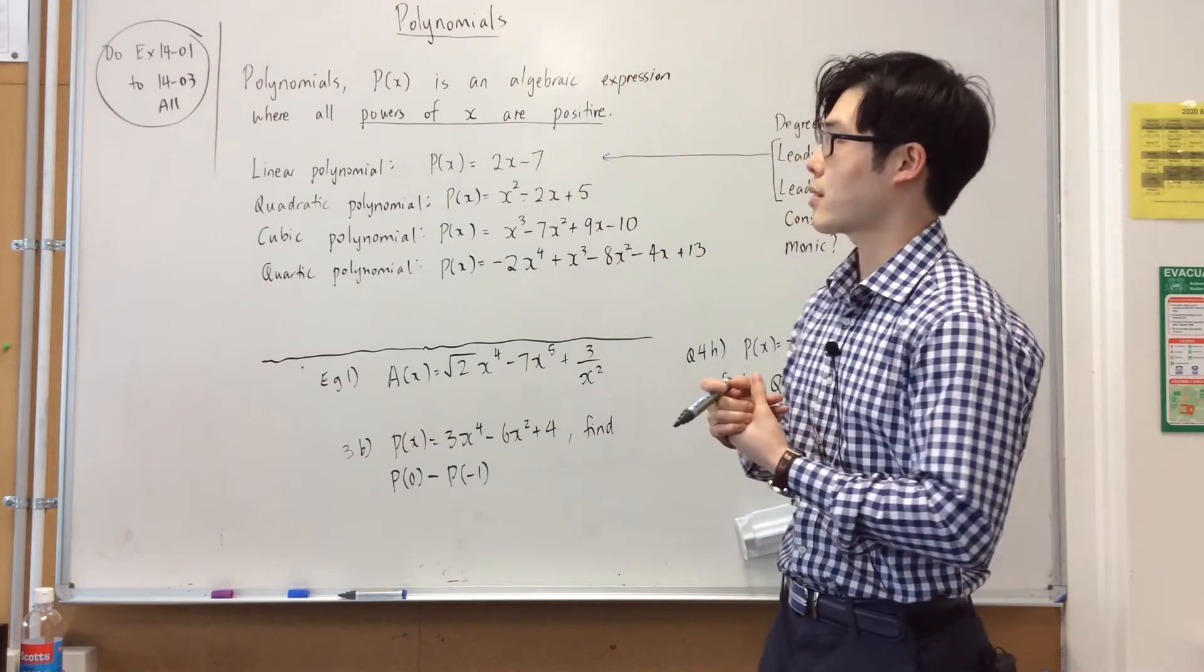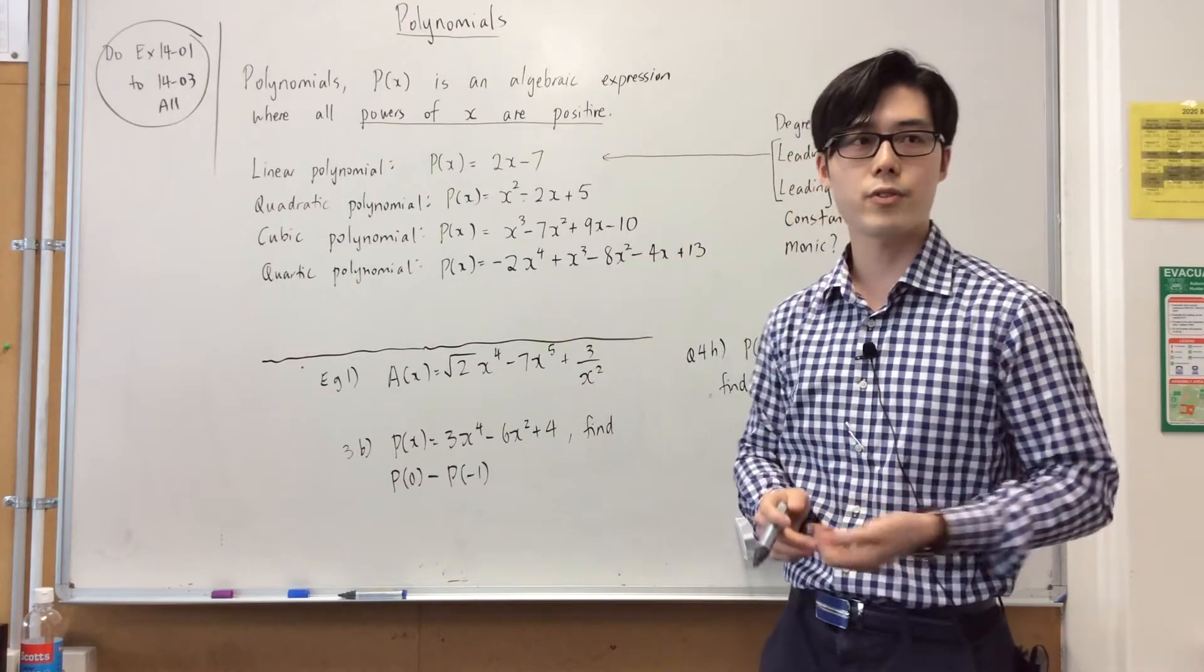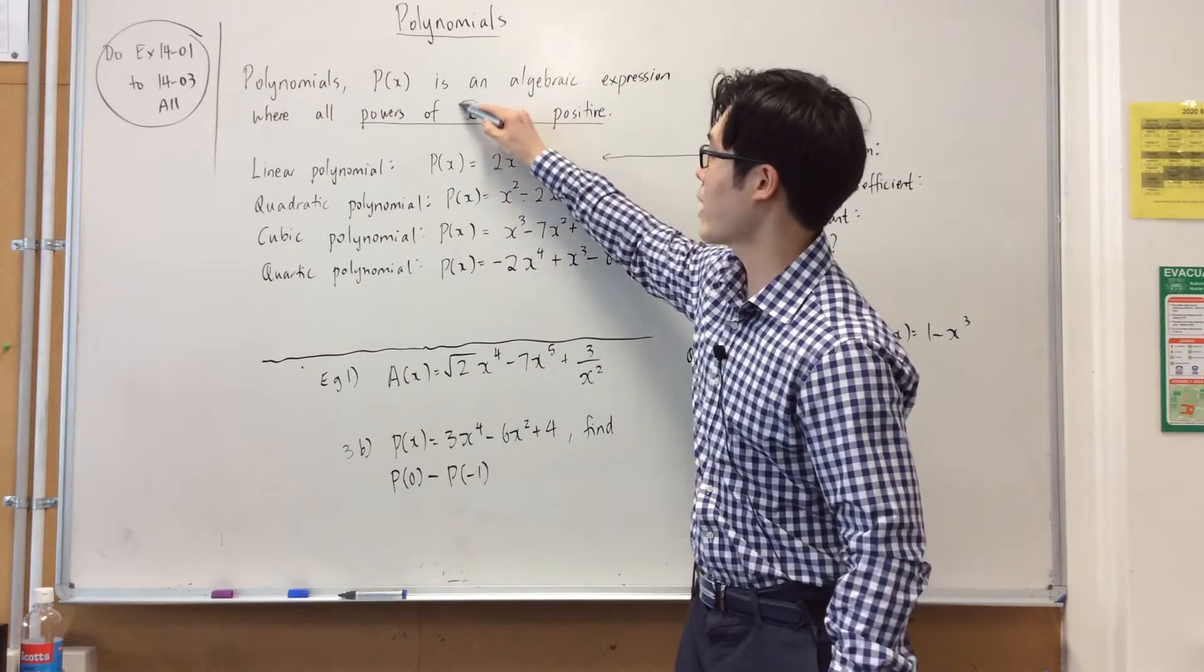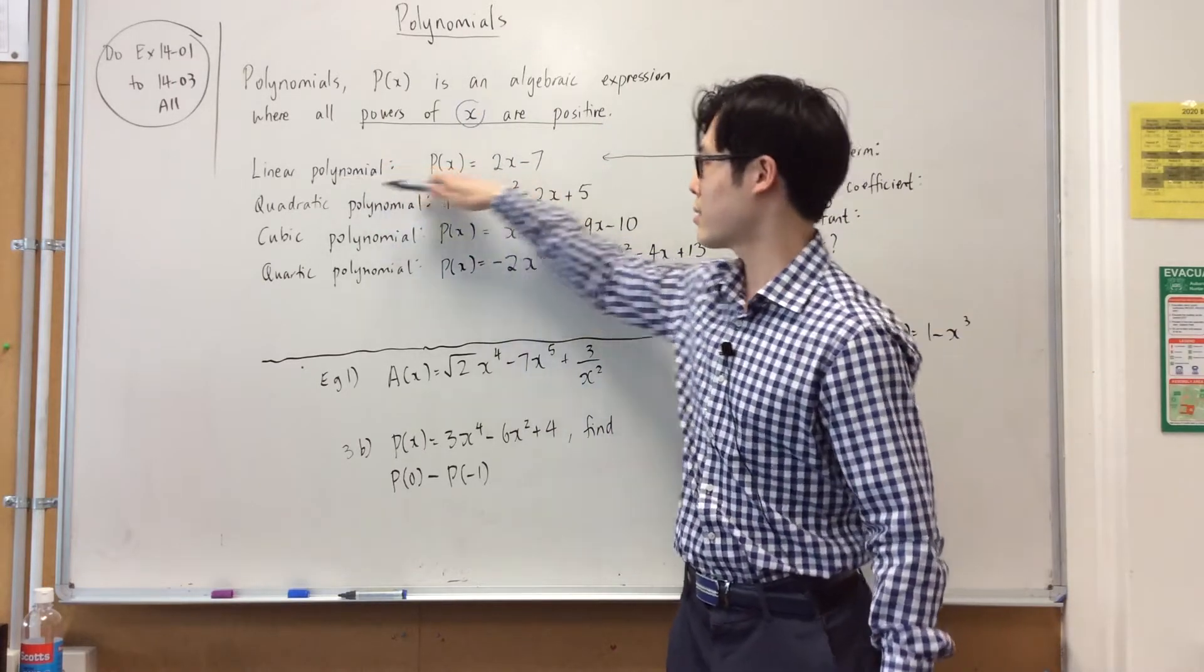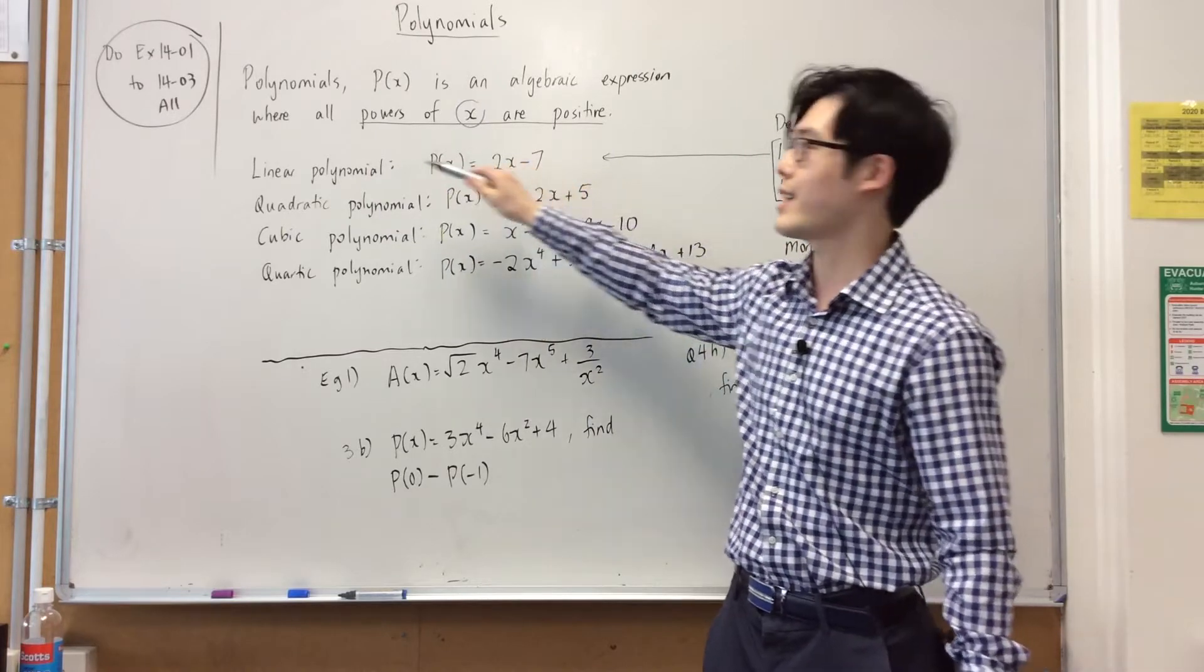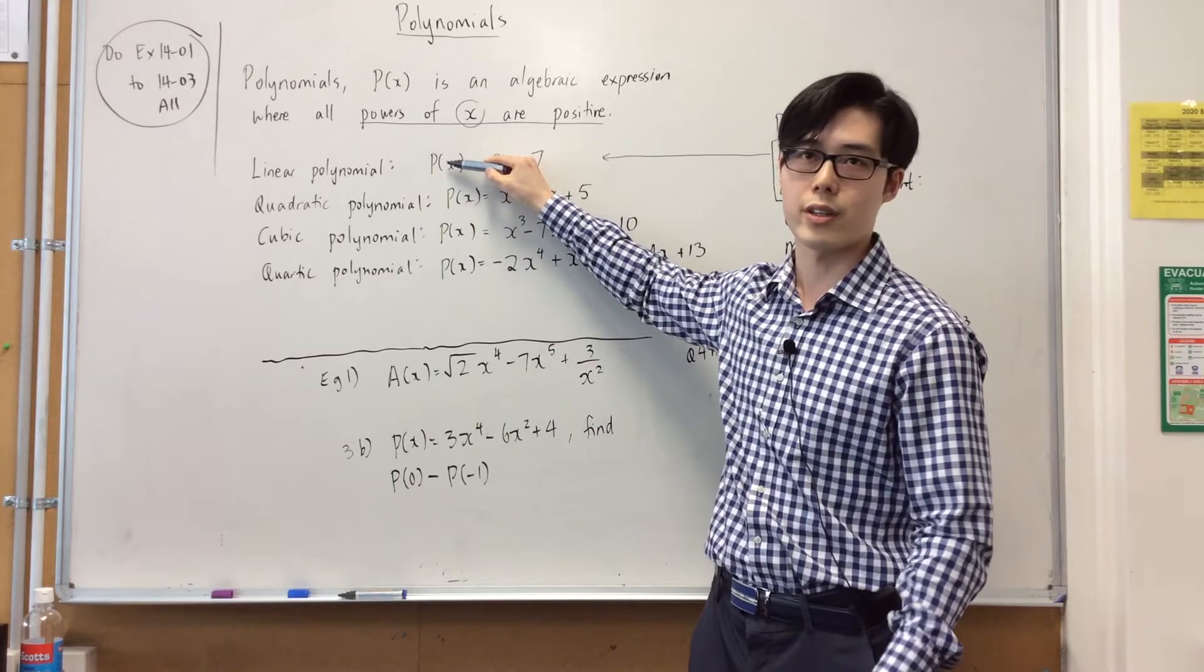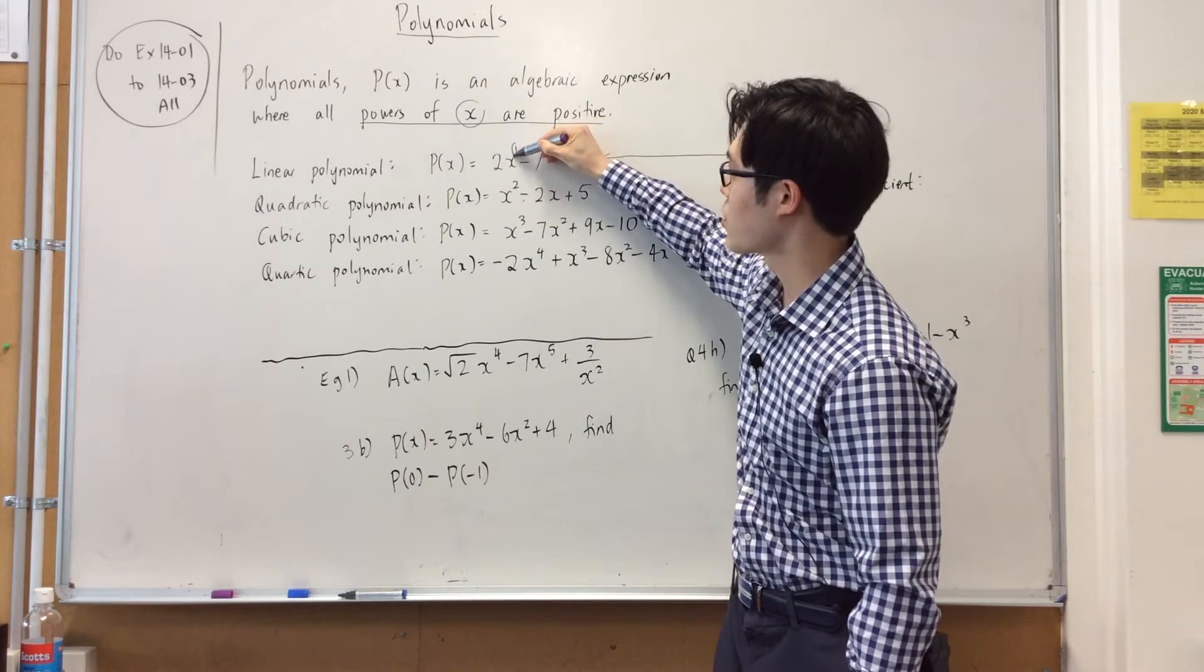So girls, basic definition, polynomials is basically an algebraic expression. The only difference between polynomials and any other algebraic expression is that the powers of x are positive. So if you have a look over here, girls, this is a linear equation but we're now calling it linear polynomial. And they denote p(x) to show that it's a polynomial and it's a polynomial when the powers of x is always positive.